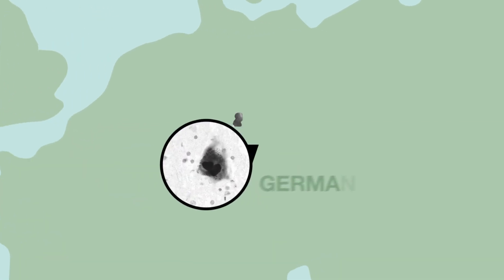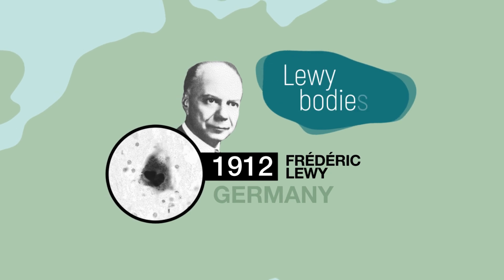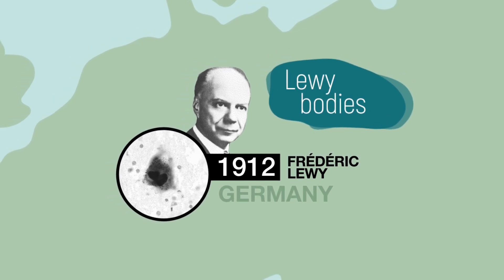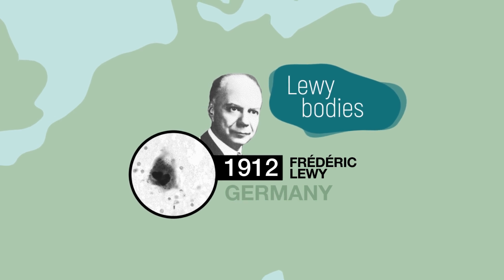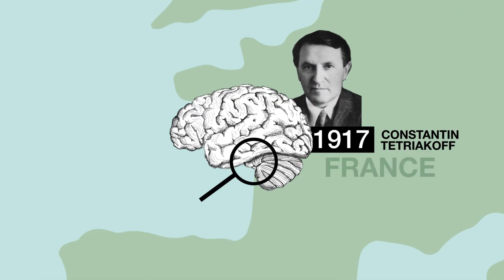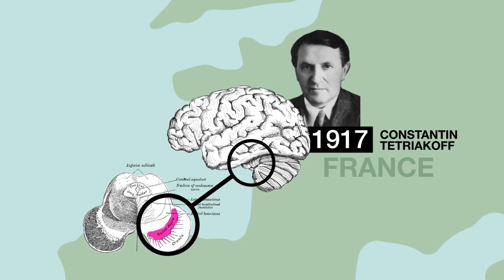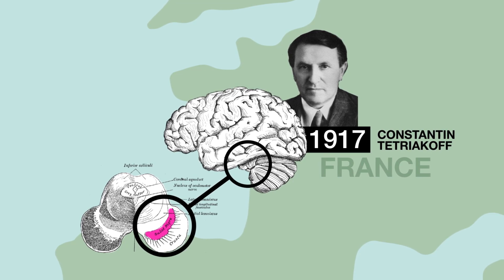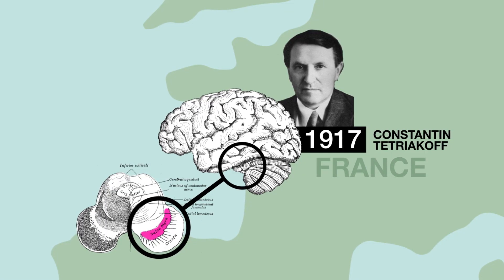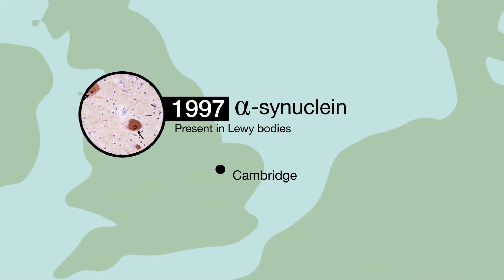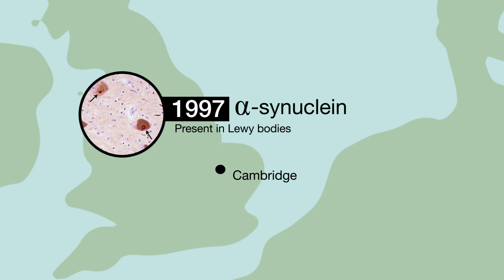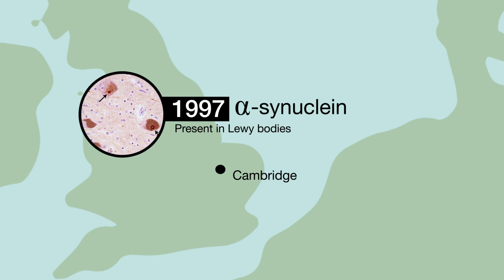A century later, abnormal protein aggregates were identified in neurons of people with Parkinson's disease. These aggregates are called Lewy bodies. Shortly thereafter, Constantin Tretiakov linked Parkinson's disease to the loss of neurons in a small brain region called substantia nigra. 1997 marked a major milestone, with the discovery that Lewy bodies are in part made of a protein called alpha-synuclein.